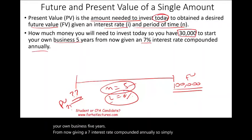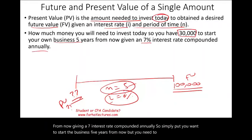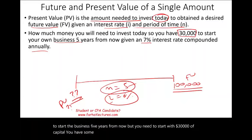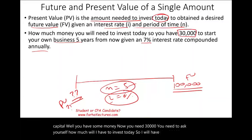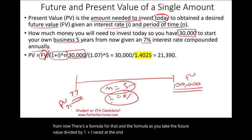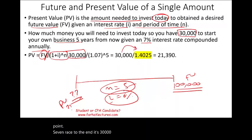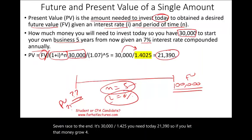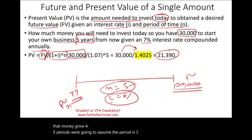How much money will you need to invest today to have $30,000 to start your own business five years from now, given a 7% interest rate compounded annually? The formula is: future value divided by (1 + i) raised to the n. So $30,000 ÷ (1.07)^5 = $30,000 ÷ 1.4025 = $21,390. If you let that money grow for five years at 7%, it will reach $30,000.